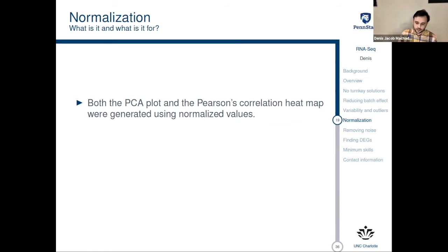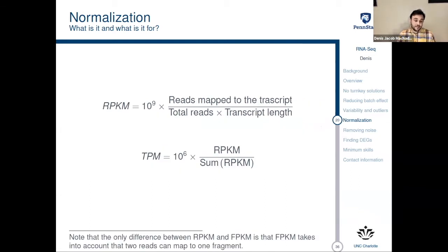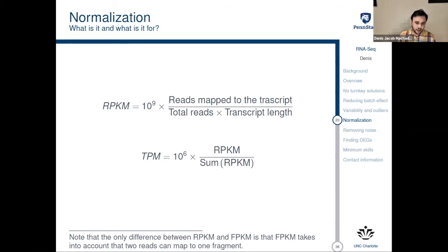Both the PCA plot and the Pearson's correlation heat map can be generated using normalized values, so normalization is a key word here. In RNA-seq, the most common normalization procedures are RPKM, FPKM, and TPM — that's reads per kilobase million, fragments per kilobase million, and transcripts per million. RPKM measures something related to the number of reads mapped to the transcript over the total number of reads divided by the transcript length. It was originally designed for single-end reads; nowadays with paired-end reads we normally use FPKM instead. TPM normalizes all the RPKM values. However, using RPKM or TPM does not mean the values are normalized across different samples — those values are normalized for your one sample.